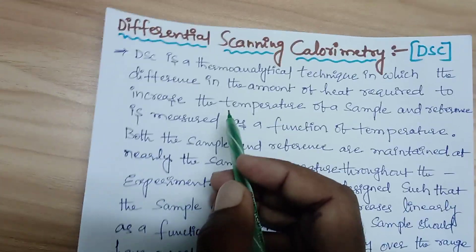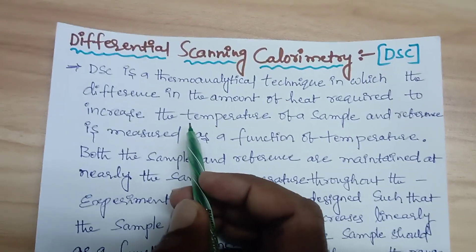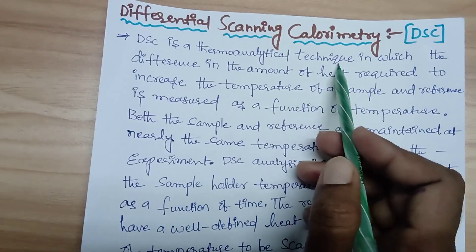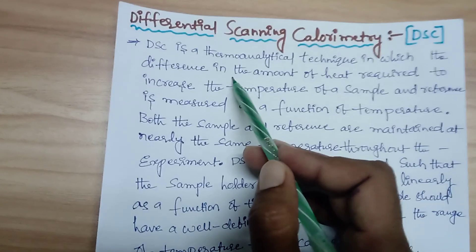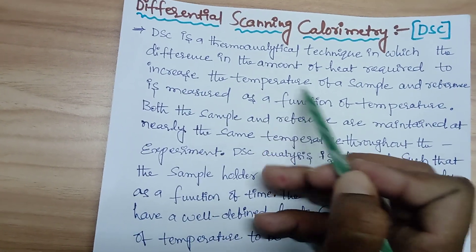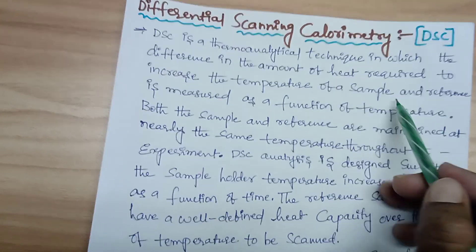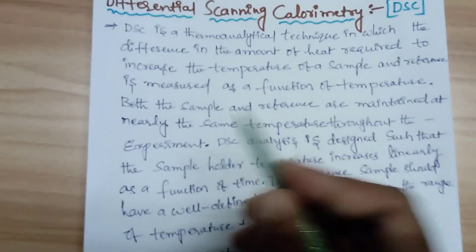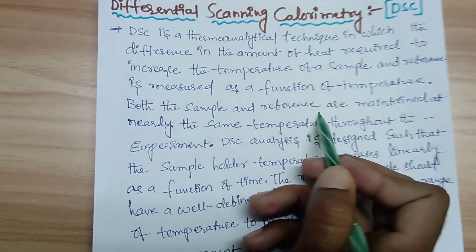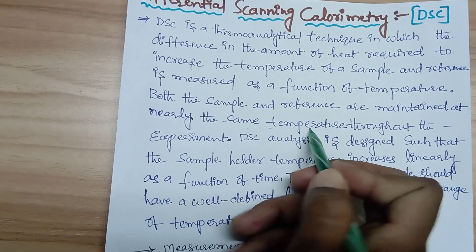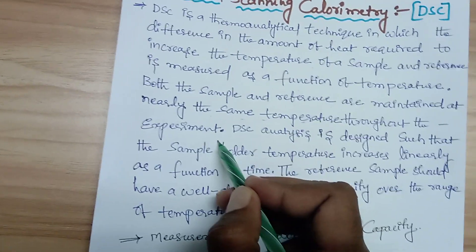The last technique is DSC — Differential Scanning Calorimetry. DSC is a thermo-analytical technique in which the difference in the amount of heat required to increase the temperature of a sample and a reference is measured as a function of temperature. Both the sample and reference are maintained at nearly the same temperature throughout the experiment.